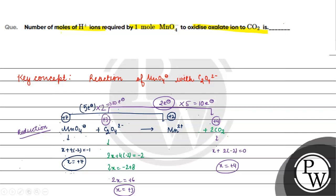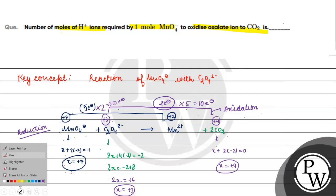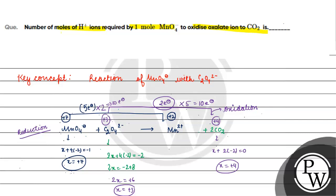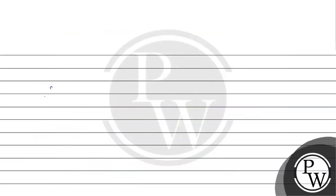Multiplying to balance electrons: we need 2 MnO4⁻ (contributing 10 electrons in reduction) and 5 C2O4²⁻ (contributing 10 electrons in oxidation). This gives the partial equation: 2 MnO4⁻ + 5 C2O4²⁻ → 2 Mn²⁺ + 10 CO2. Atoms are now balanced.